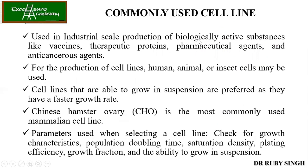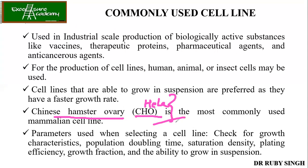A commonly used cell line is CHO — Chinese Hamster Ovary. Whenever you enter an animal tissue culture lab for the first time, you are given CHO or HeLa cells to practice on. After practicing on these easy cell lines, other more difficult cell lines are given.